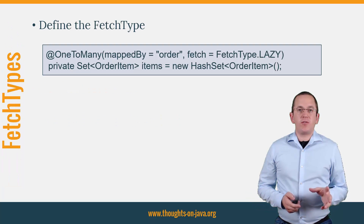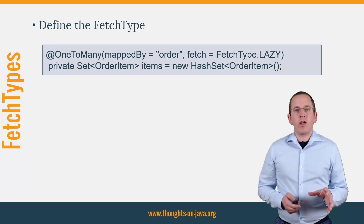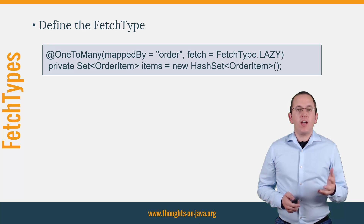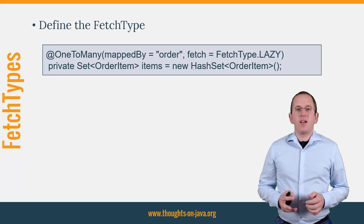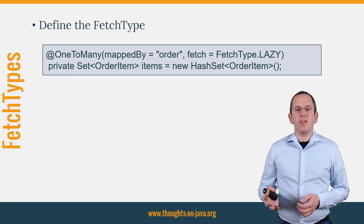Even the best default doesn't fit all use cases, and you sometimes want to change it. You can do this by providing your preferred FetchType to the relationship annotation, as you can see in the code snippet. Let's get into the IDE and have a closer look at the different FetchTypes.